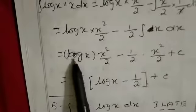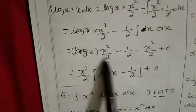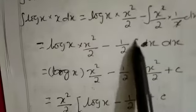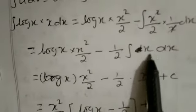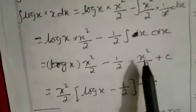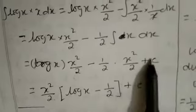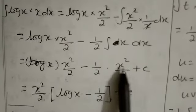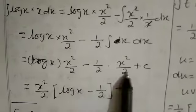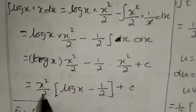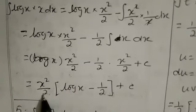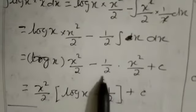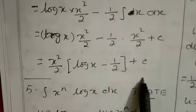So the expression is log x into x squared divided by 2, minus 1 by 2 into integration of x, which gives x squared divided by 2. Now we see x squared by 2 appears in both terms, so we take it outside. The final answer is x squared by 2 into (log x minus 1 by 2) plus c.